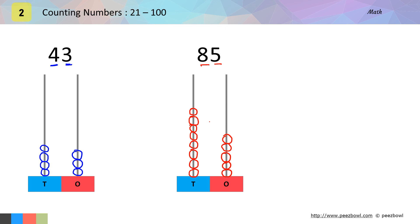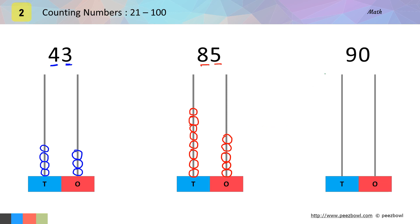Let us take one last example. In this case, we have 90. In 90, we have 0 at the 1s place, so I will draw 9 circles on the 10s line — here we have 1, 2, 3, 4, 5, 6, 7, 8 and 9 circles on the 10s line.